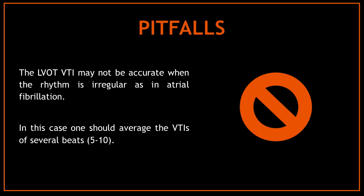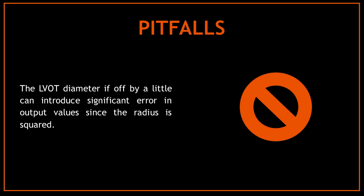Now let's talk about some of the pitfalls you may encounter. The LVOT VTI may not be accurate when the rhythm is irregular, as in atrial fibrillation. In this case, one should average the VTIs of several beats — approximately 5 to 10. Also, if the LVOT diameter is off by even a little, it can introduce significant error in output values, since the radius is squared in the LVOT diameter calculation.